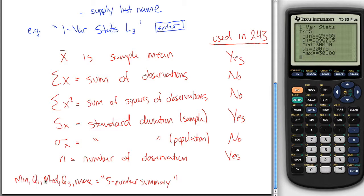your third quartile, and your largest observation. So that's what this is saying here. This is the smallest number I put in, this was the biggest, this was the median, and this is first and third quartile. These will absolutely be used in Math 243. That is everything you get out of one-variable statistics.